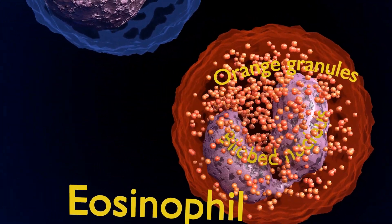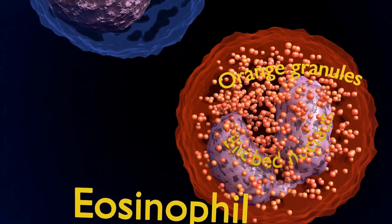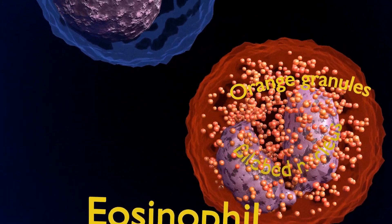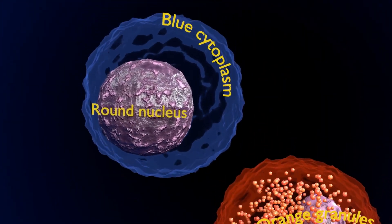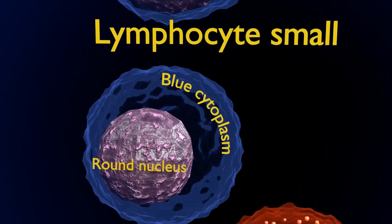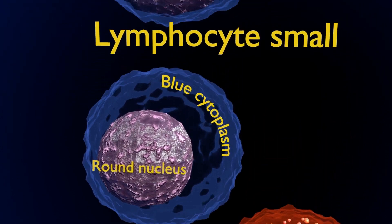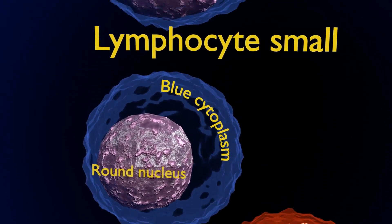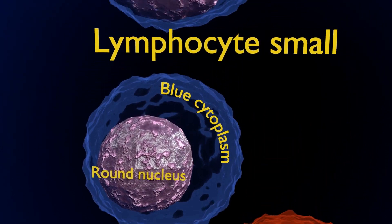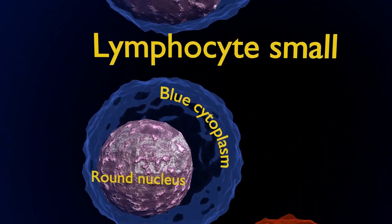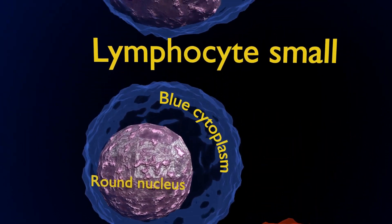Continuing this series of leukocytes, lymphocytes are of two types. Small lymphocytes have a nuclear size equivalent to red blood cells. As you can see, they have a round-shaped nucleus which is darkly stained, with a fine rim of cytoplasm without any visible granules.